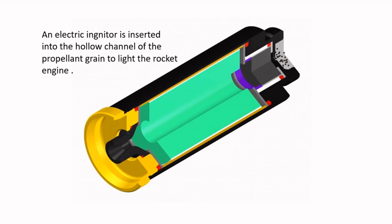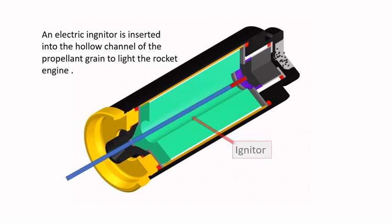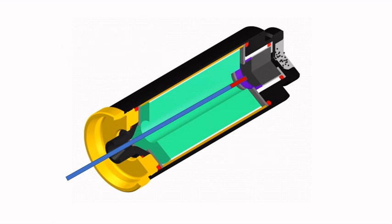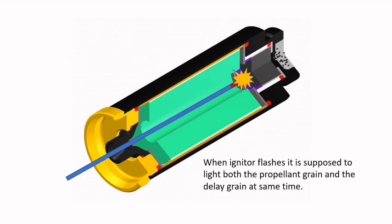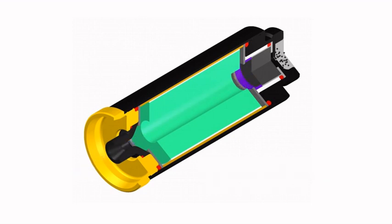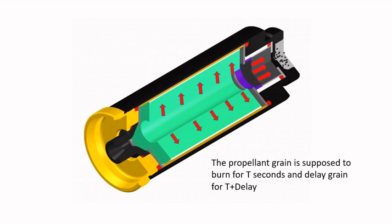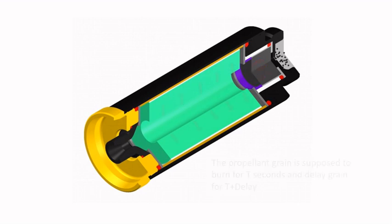To light the rocket engine, an electric igniter is inserted into the hollow channel of the propellant grain. When the igniter flashes, it is supposed to light both the propellant grain and the delay grain at the same time. The propellant grain is supposed to burn for T seconds and the delay grain for T plus delay.